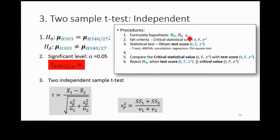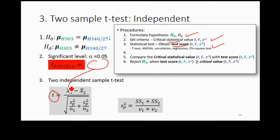So the steps are: formulate a hypothesis, set the criteria and get the critical statistical value, calculate the statistic to get the test score T, then compare the critical T with the test score. If your calculated T is larger than your critical T, you will reject the null hypothesis.